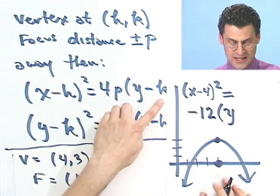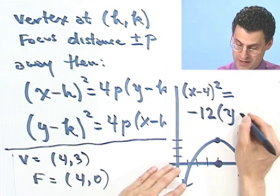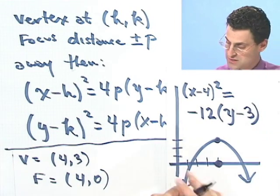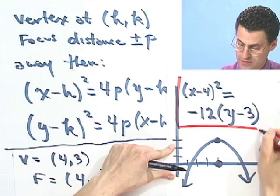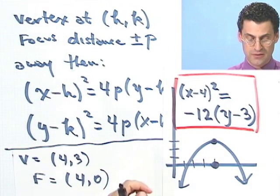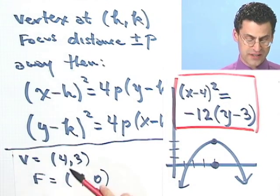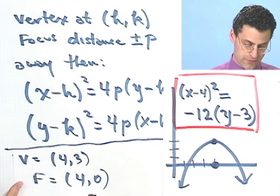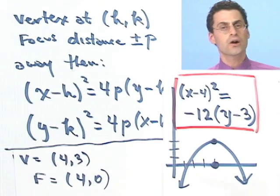So negative 3 times 4 is negative 12 times (y minus k). And what's k? Well, k is 3, so I have minus 3. So in fact, that is the equation for the unique parabola that has a vertex at (4,3), and a focus at (4,0).